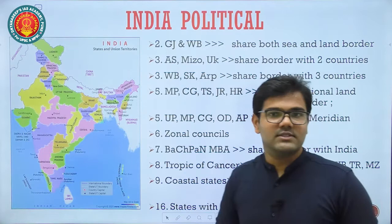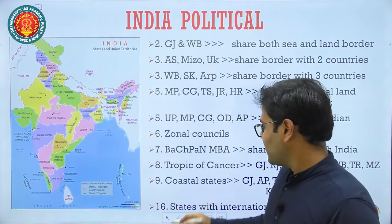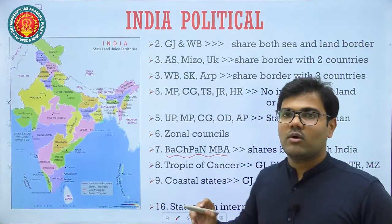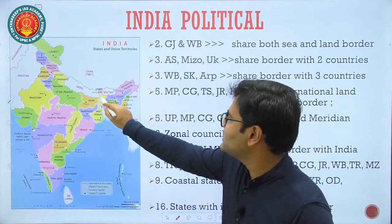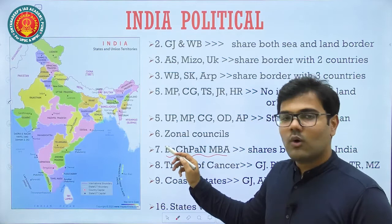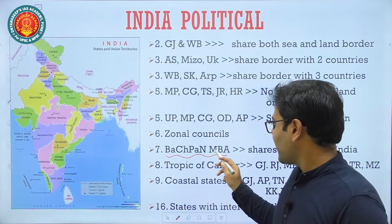India shares its longest international border with Bangladesh, second longest with China, then Pakistan, Nepal, Myanmar, Bhutan, and Afghanistan. This sequence is in order from longest to shortest shared border. These are the seven countries with which India shares its international borders.